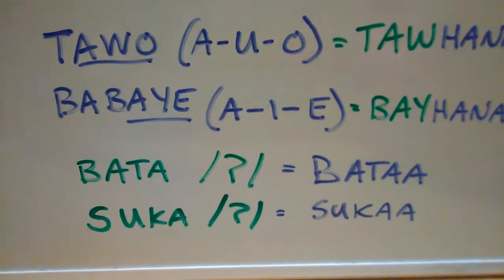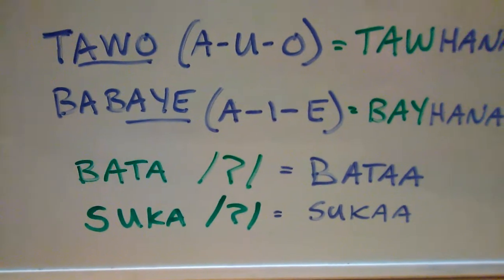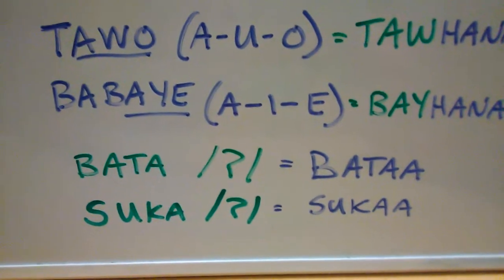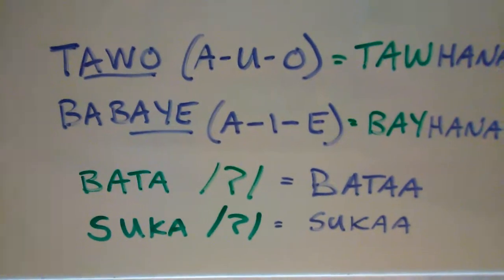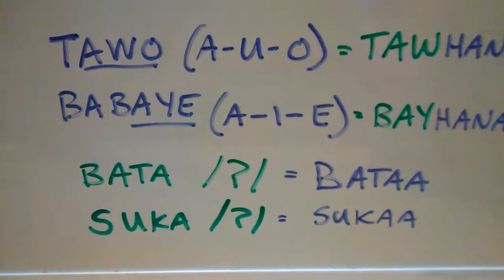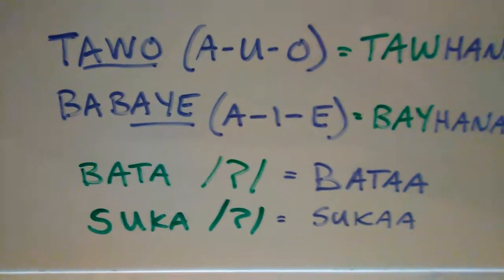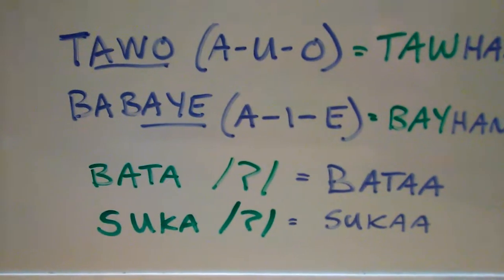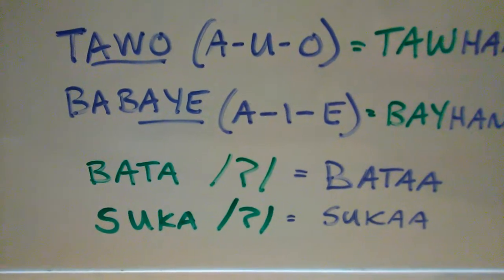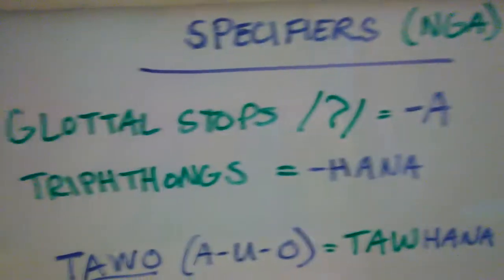'Ba ta' ends with a glottal stop after the 'a', and since it ends in a glottal stop it has to take another 'a', so we get 'ba ta a'. Like, 'what child was that?' — 'kanang ba ta a', meaning 'that child'. Similarly, 'suka' becomes 'suka ah'. This is just another continuation of the specifiers video.